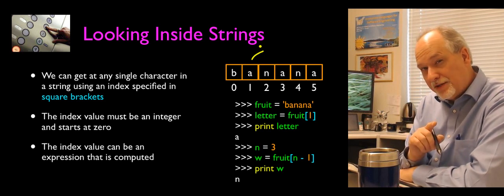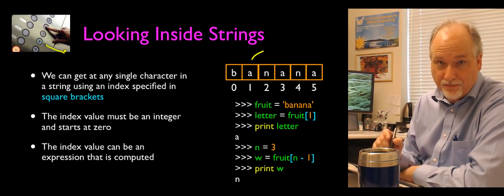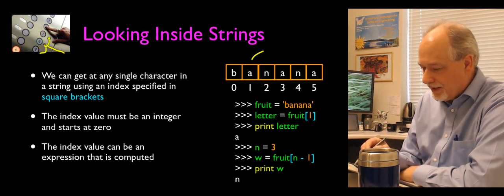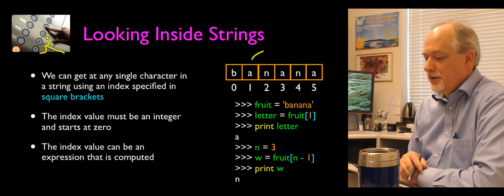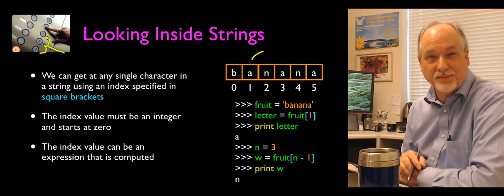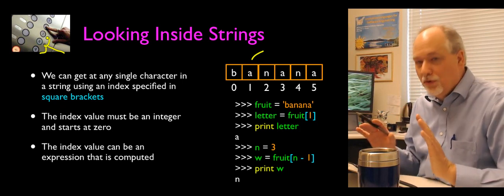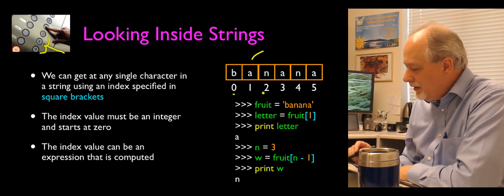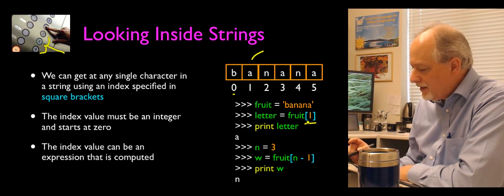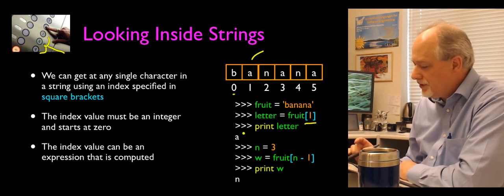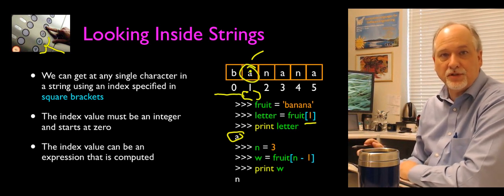It may seem a little weird that the first character is at index 0 and the second is at index 1. It's similar to the European elevator thing where the first floor is 0. It turns out that internally, 0 is a better way to start than 1. You'll get used to it. So for banana: 0 is 'b', 1 is 'a', 2 is 'n', et cetera. We call this syntax fruit sub 1. fruit[1] looks up banana at position 1 and returns 'a'. What's inside the brackets can be an expression — if n is 3, then n minus 1 computes to 2, and fruit[2] is the letter 'n'.